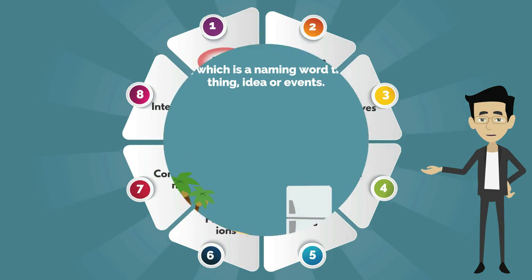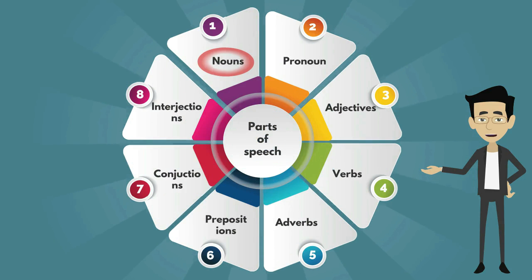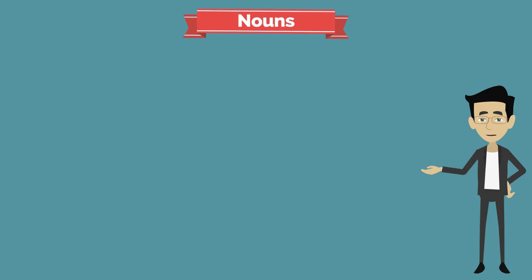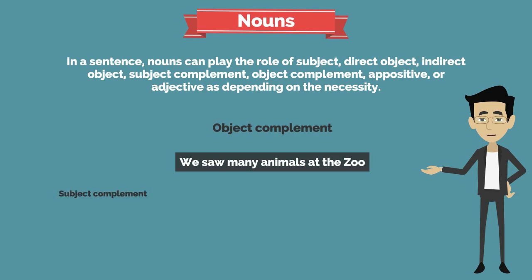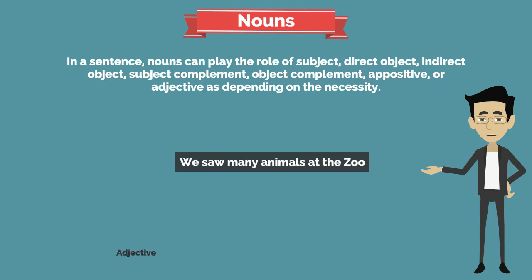Nouns are the simplest among the 8 parts of speech. In a sentence, nouns can play the role of subject, direct object, indirect object, subject complement, object complement, appositive, or adjective depending on the necessity.